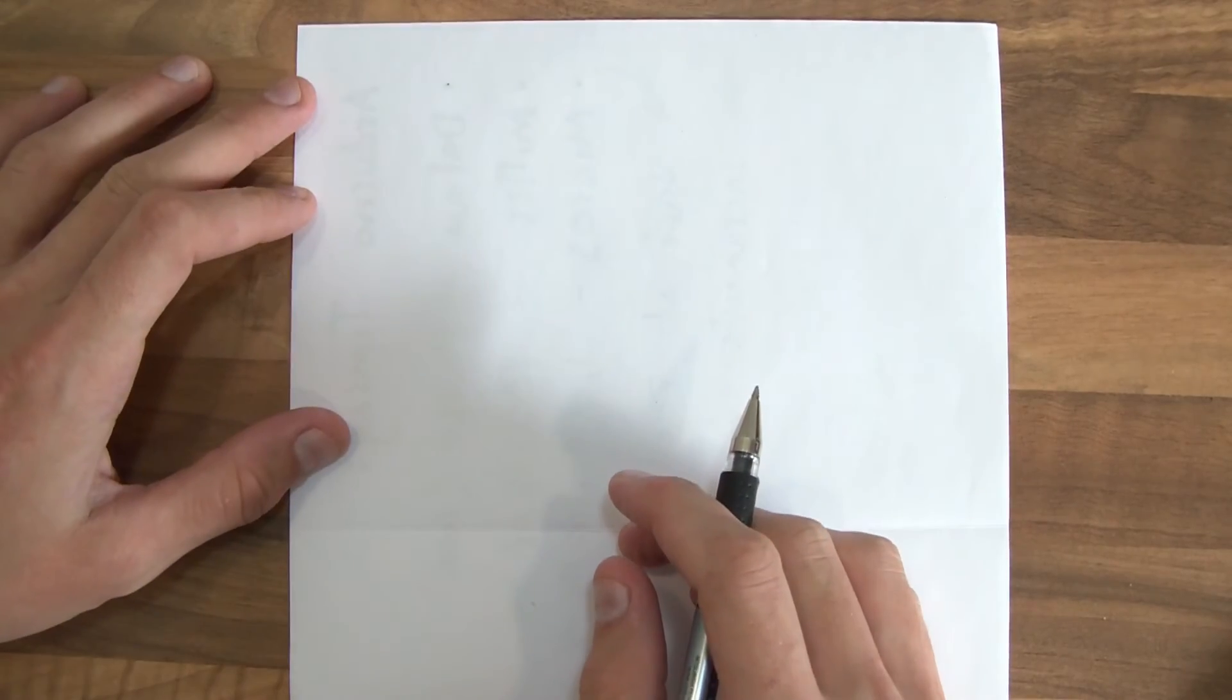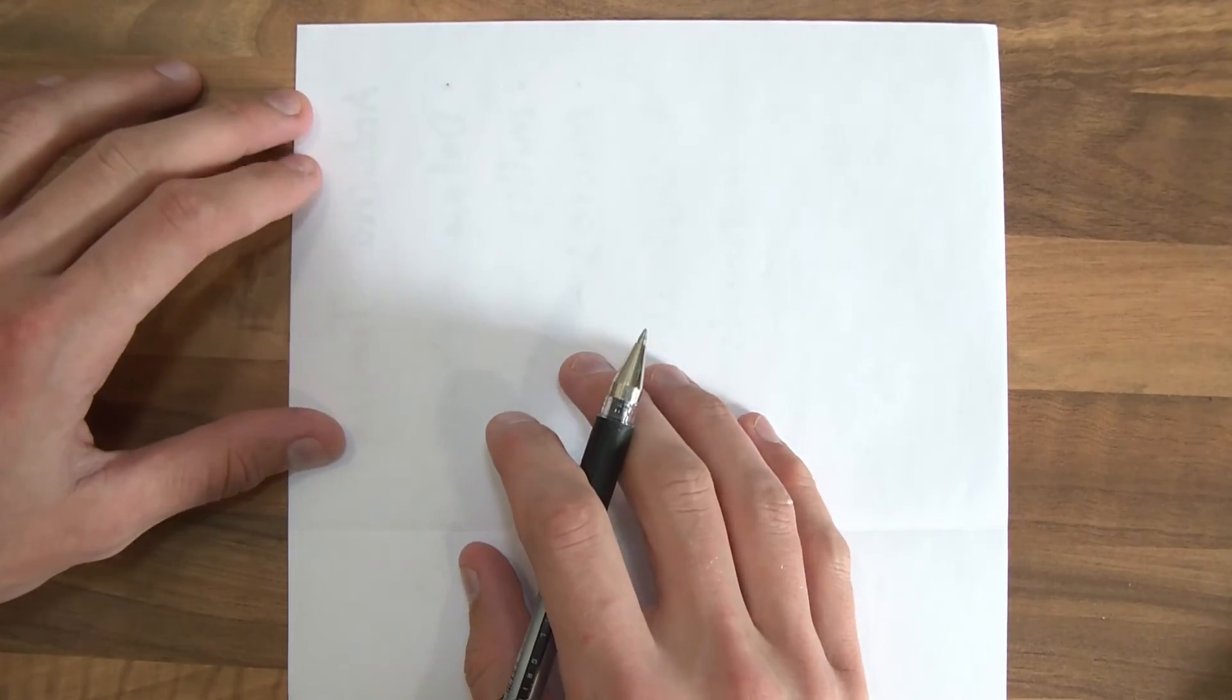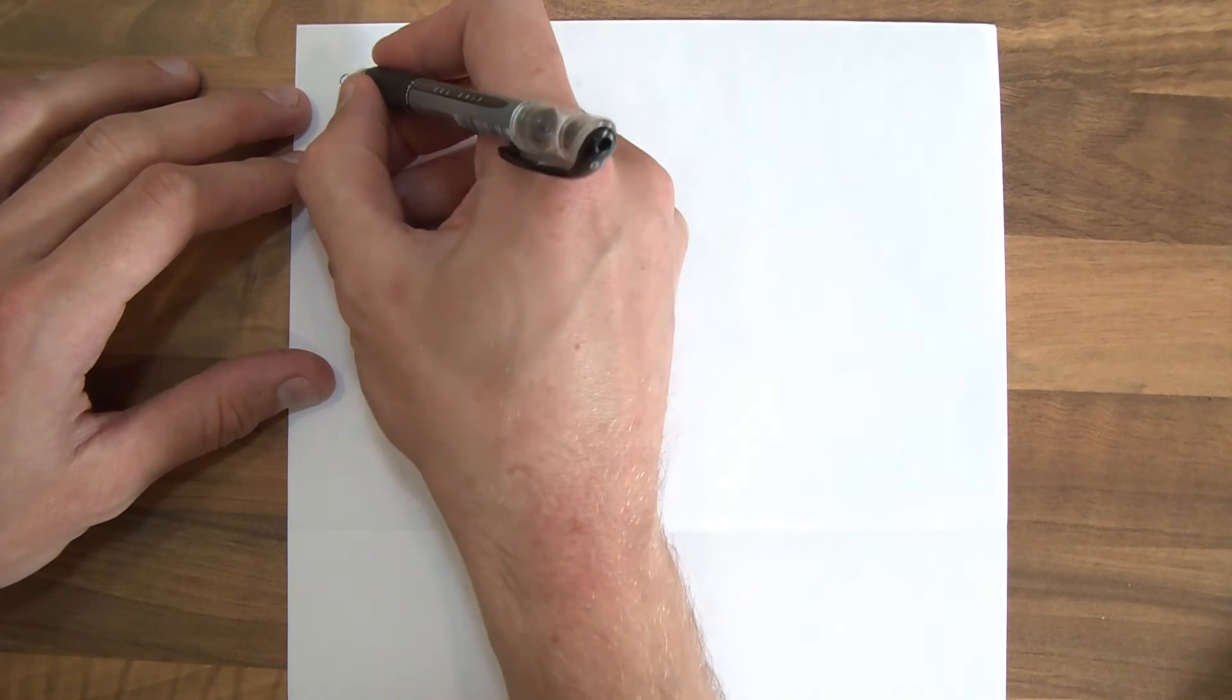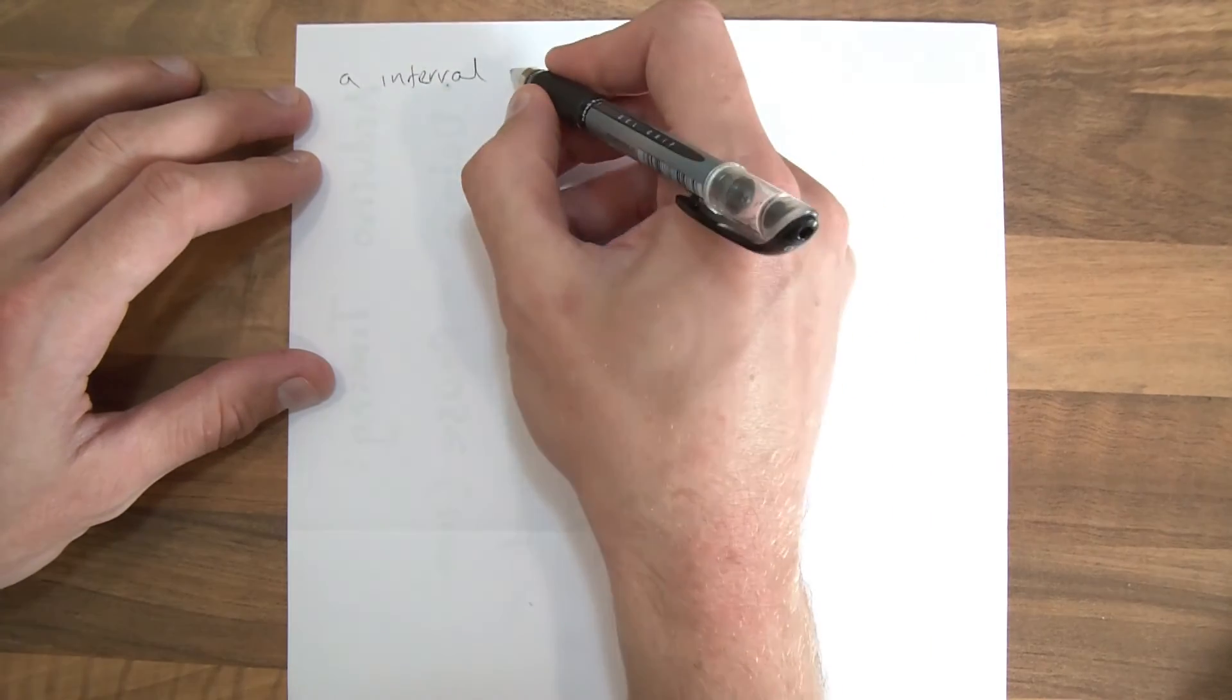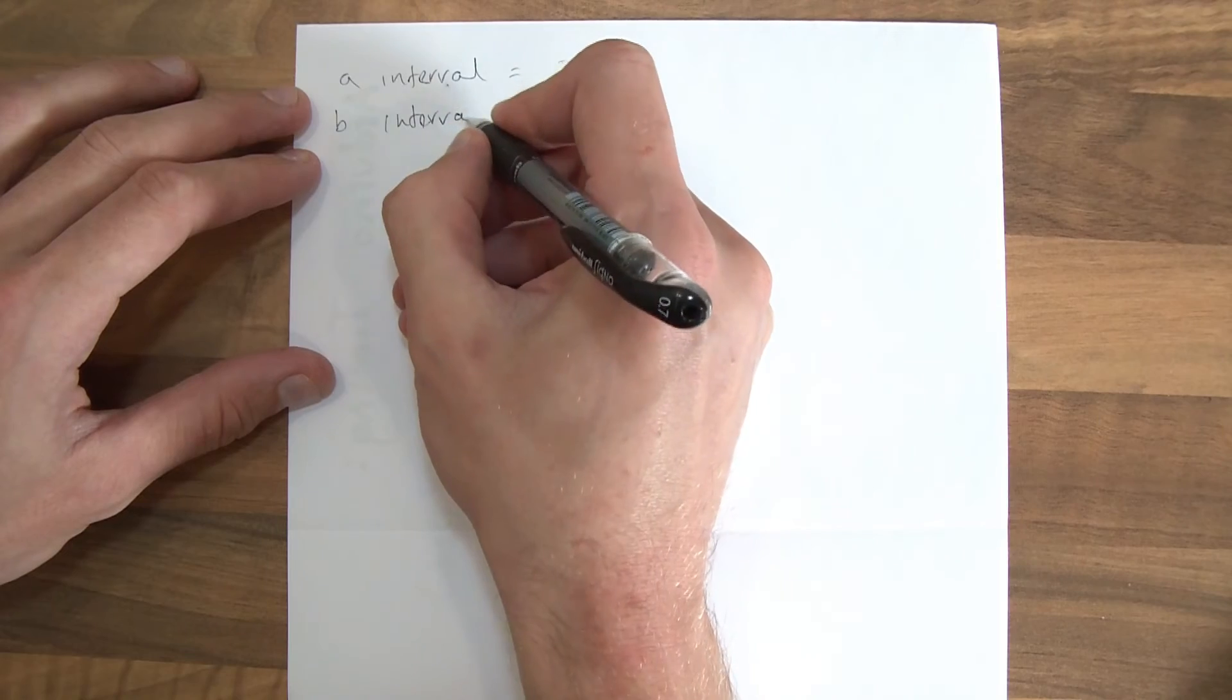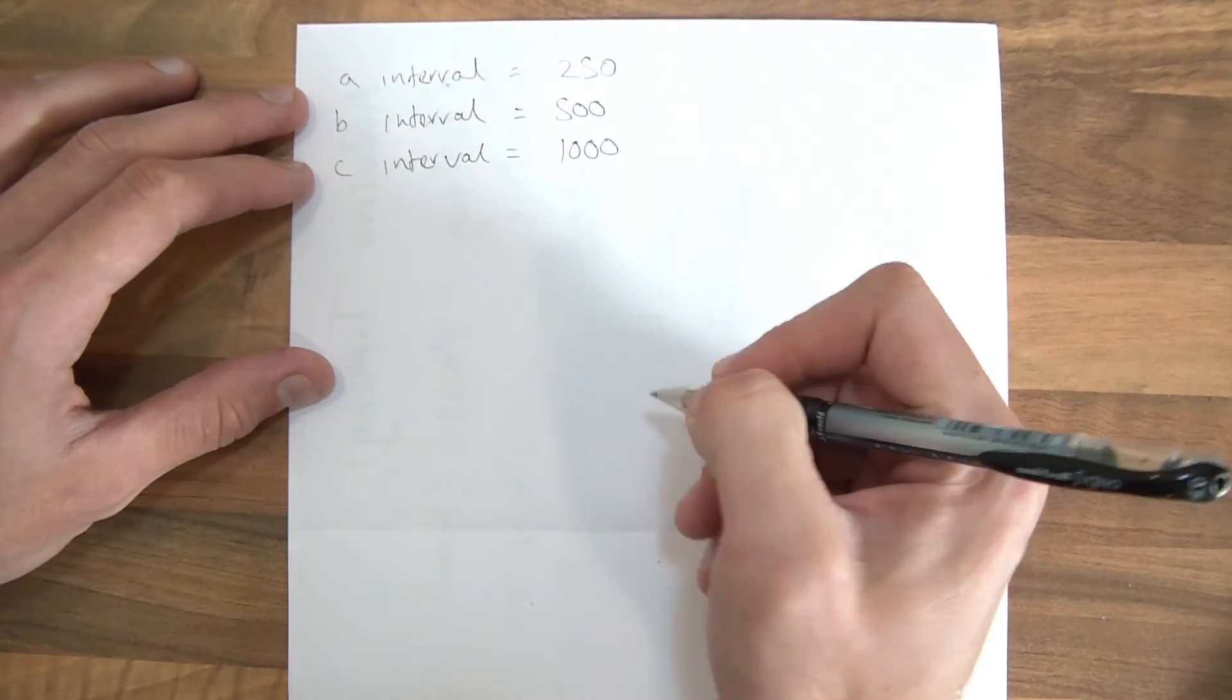OK, so I'm going to do this in pseudocode. So this isn't any particular language, but it's just a way of conveying the information across. So to start with, let's say we've got three tasks: task A, task B and task C. So we need to set the interval. So A interval equals, let's say 250 milliseconds. And then we'll set B interval, and we'll do that every 500 milliseconds. And we've got C interval. And that can be every 1000 milliseconds.